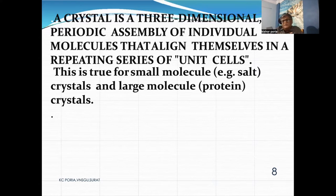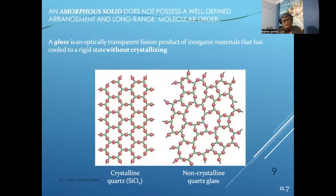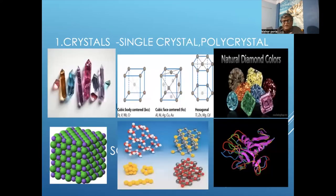Macromolecular structures also exhibit crystalline behavior. In the crystalline phase, all atoms are regularly arranged, while in the amorphous phase, atoms are randomly arranged. It is possible to synthesize single crystals and grow them in the laboratory. Real photographs of single crystals demonstrate this. Crystals are generally explained using the seven Bravais lattice systems.